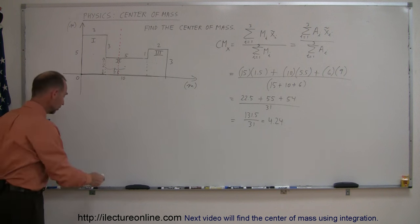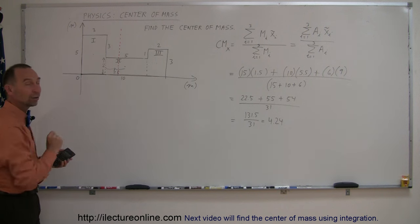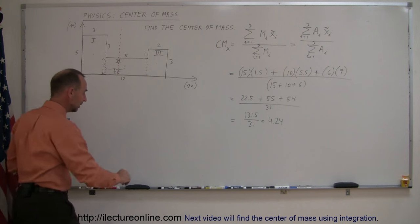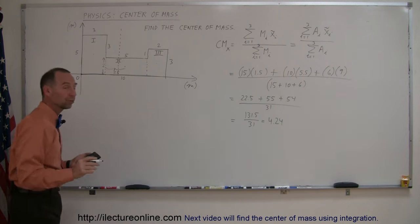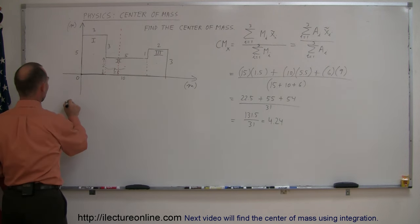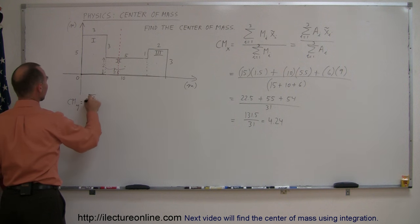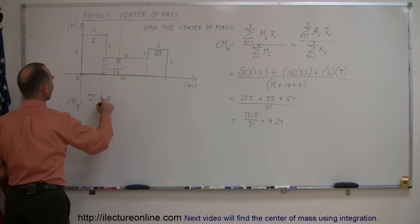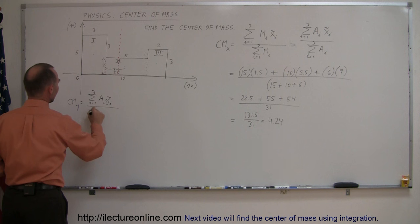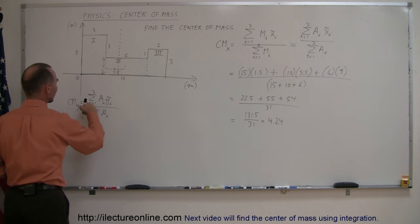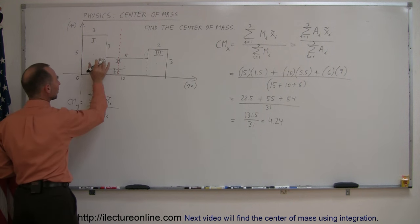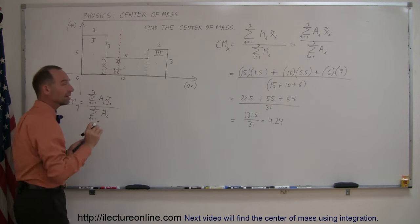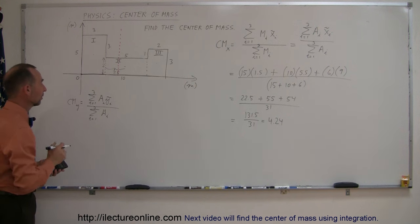Now we need to find the y-coordinate of the center of mass to find the exact location for this object. So we'll do the same thing again as we did for the x-direction, but now for the y-direction. The center of mass in the y-direction is equal to the sum of all the areas of each piece times the center of mass in the y-direction for each piece, from i equals 1 to 3, divided by the sum of all their areas from i equals 1 to 3.